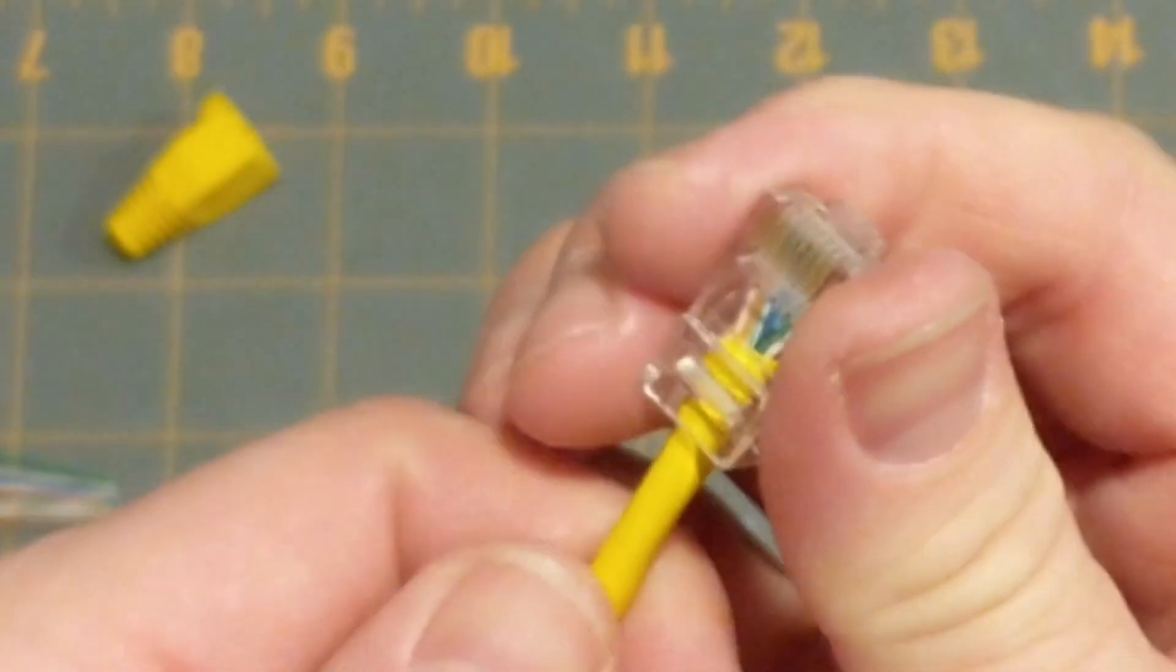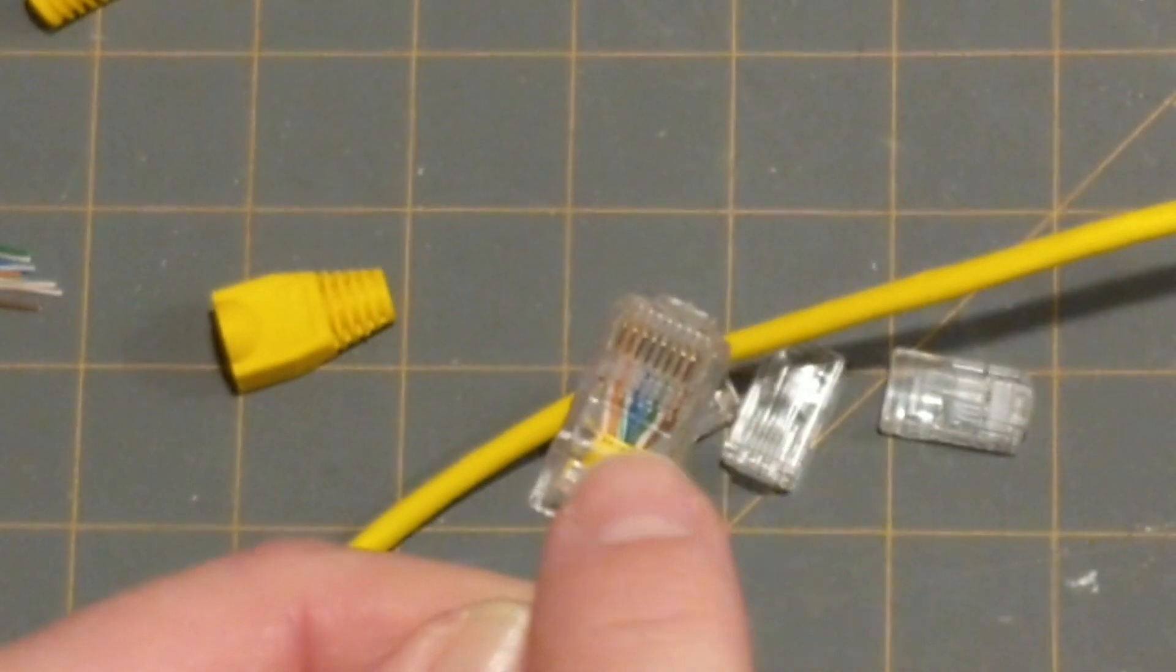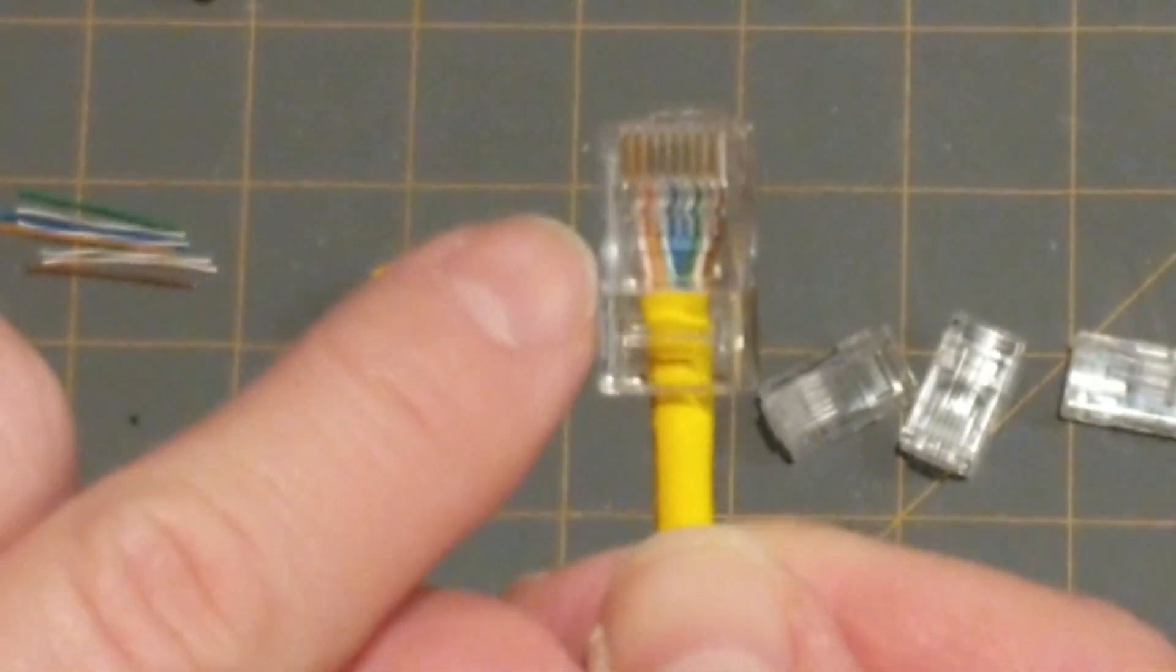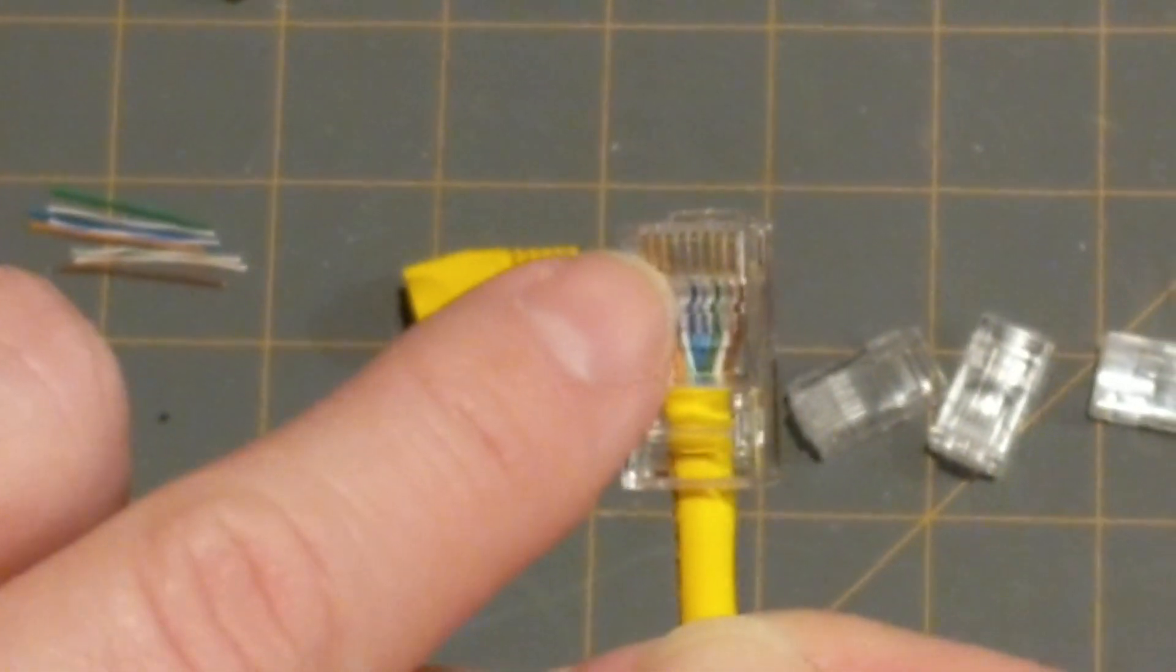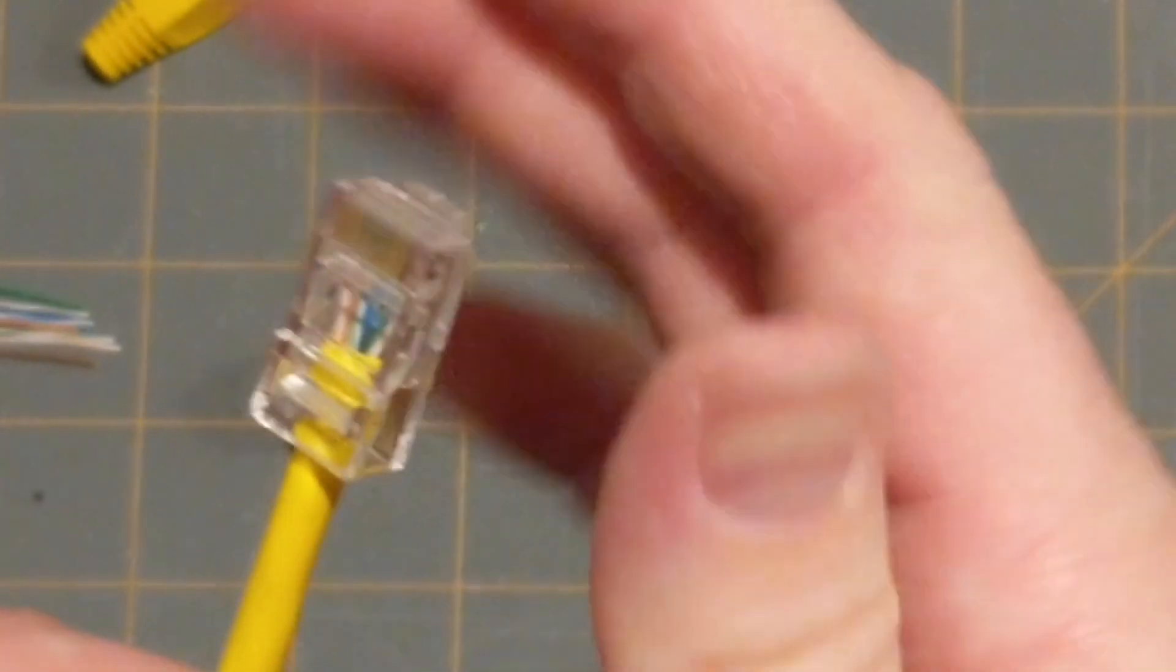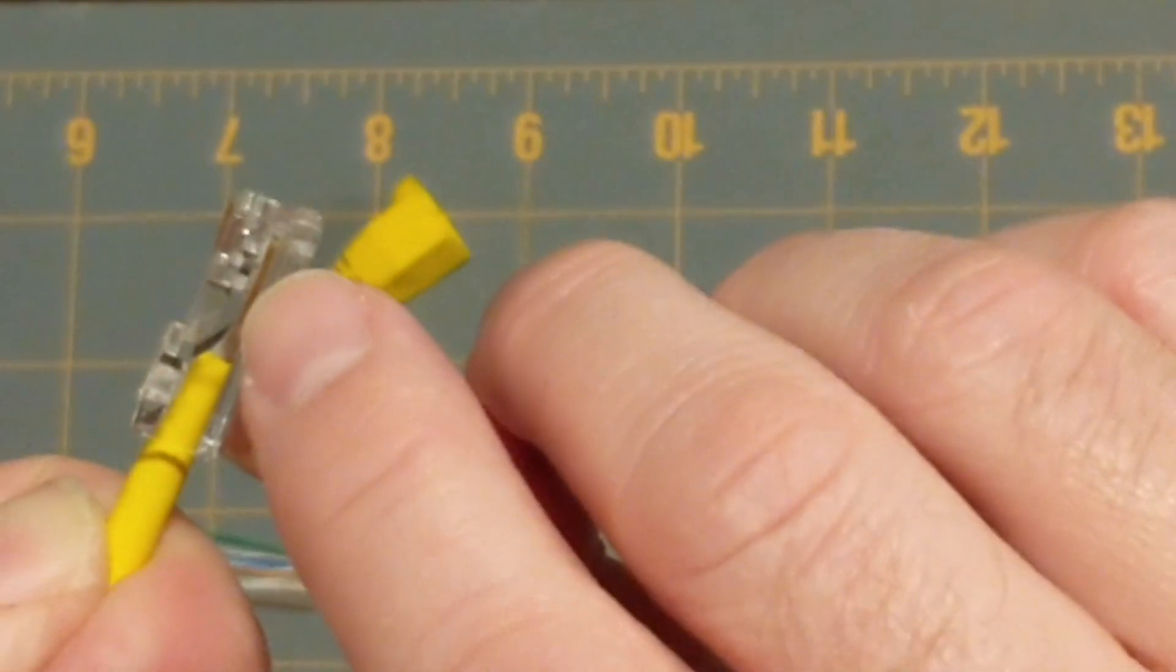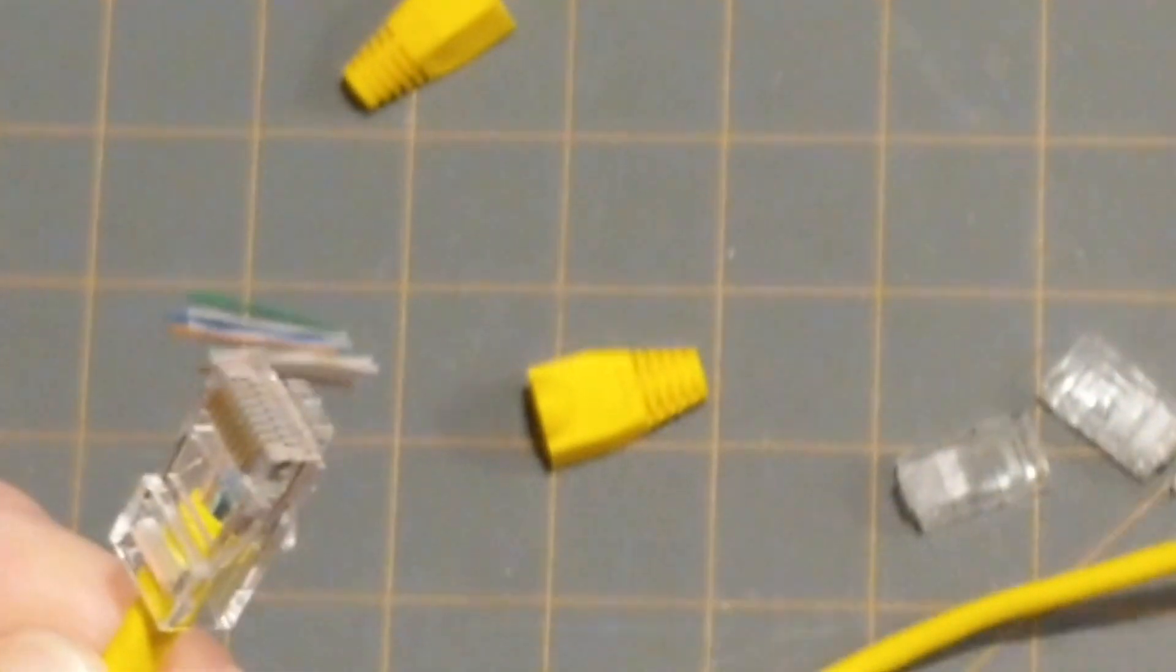So once we've done that, we are not ready to crimp this on. We need to look very carefully again at the order. White, orange, orange. White, green, blue. White, blue, green. White, brown, brown. Once we're absolutely sure that they're in the right order, and that the wires have gone all the way to the very tip of this connector, then we pick up the RJ45 crimp tool.